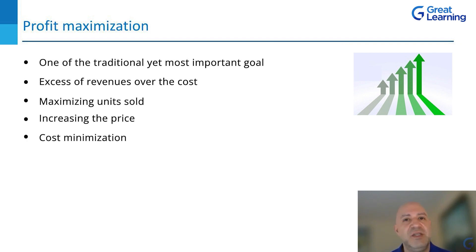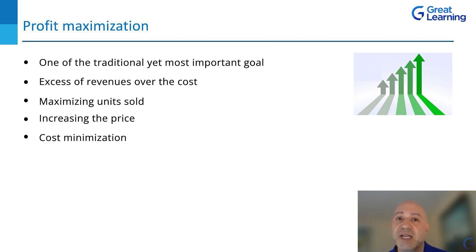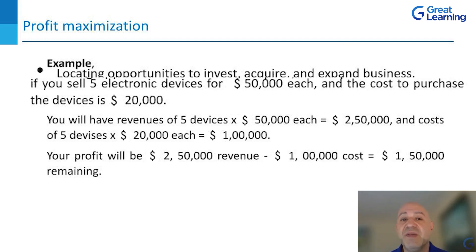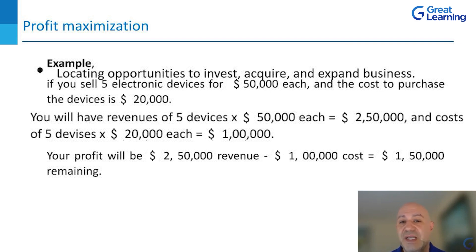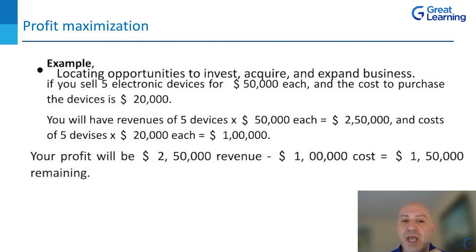Cost minimization — you don't want to spend money you don't have to. When you do your annual plan and look at all the predictable costs — and unpredictable ones too — you want to build your product for the least amount possible without sacrificing quality. You want to locate opportunities to invest, acquire, and expand your business. For example, if you sell five electronic devices for $50,000 each and the cost of purchase is $20,000, you will have revenues of $250,000 and costs of $100,000, and your profit is the revenue minus whatever costs remain.